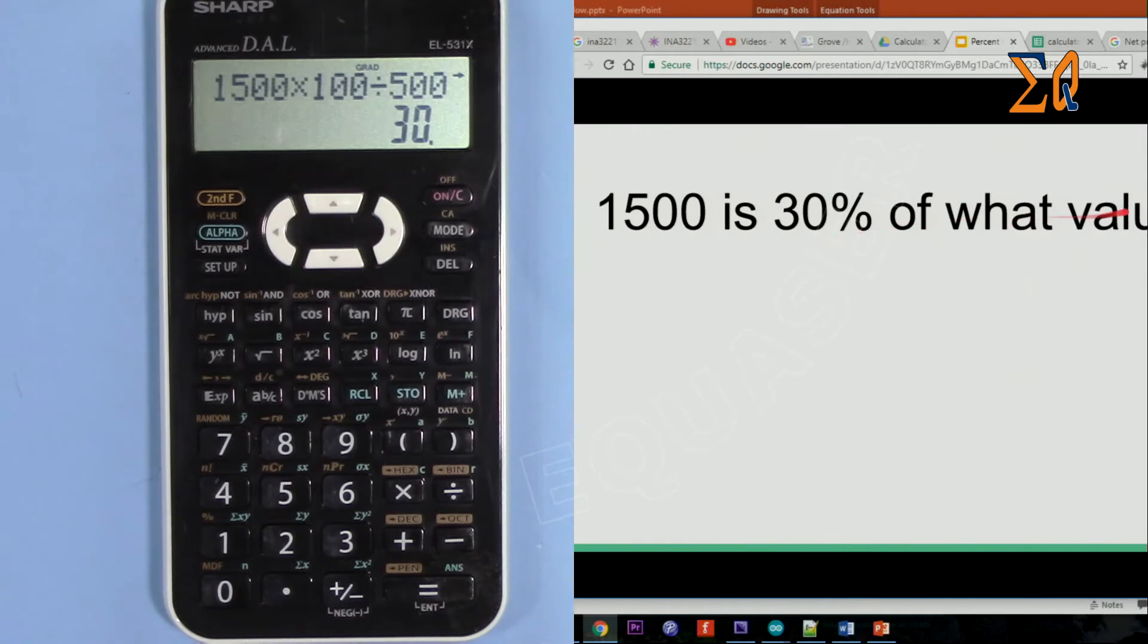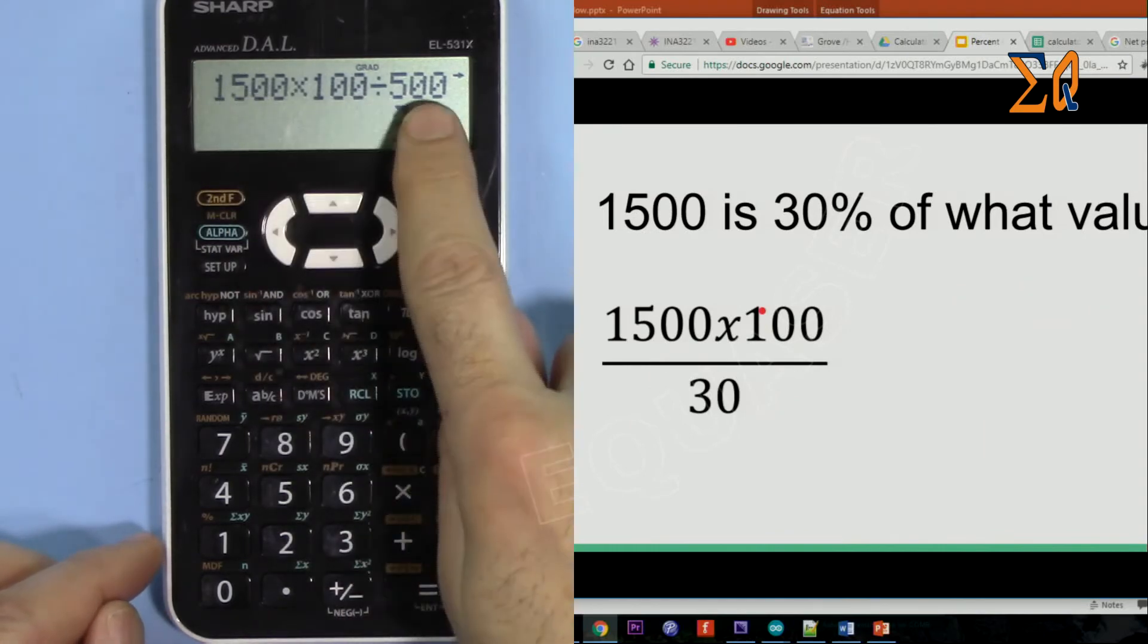In this case again we know the answer because it's 5000, but let's see how we can do it. Again it looks the same: 1500 times 100 divided by 5000. This time it's 30.